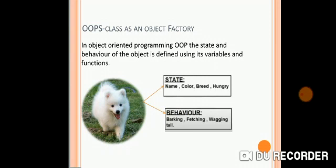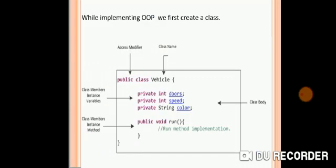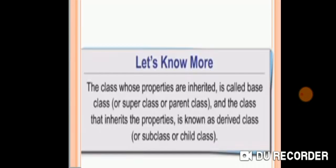Now we will see how it is linked with object-oriented programming. While implementing OOP, we first create a class. Inside the class we define the variables and functions for its objects. The variables describe the characteristics of the objects and the functions describe its behavior. For example, in the Vehicle class, the variables — or member data or instance variables — are door, speed, and color, and the method or behavior is to run.